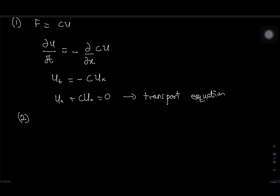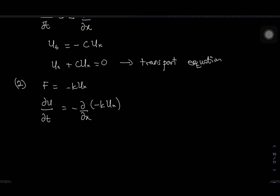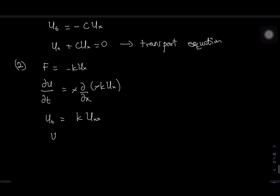Similarly, let's pick f = −ku_x, where k is the diffusivity. Applying the conservation law, ∂u/∂t = −∂/∂x(−ku_x). The two negatives cancel out, giving us u_t = ku_xx, or u_t − ku_xx = 0, and that is the diffusion equation.